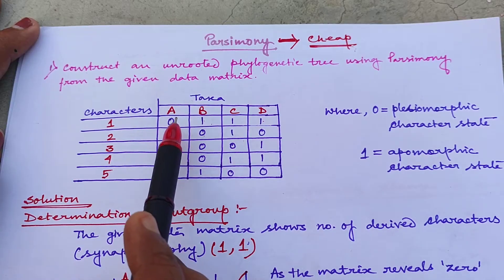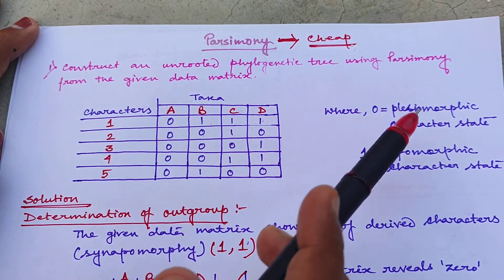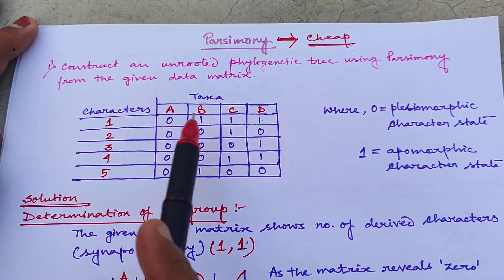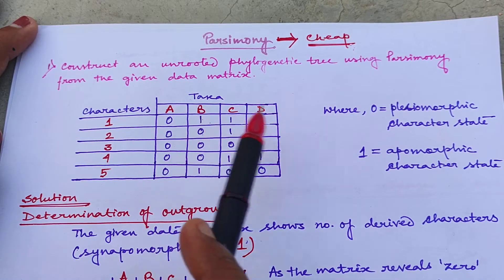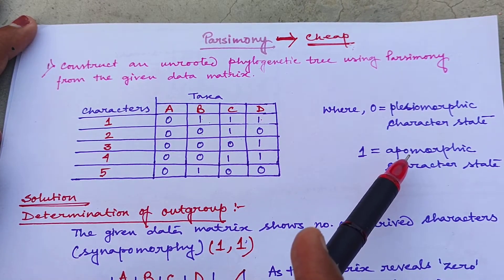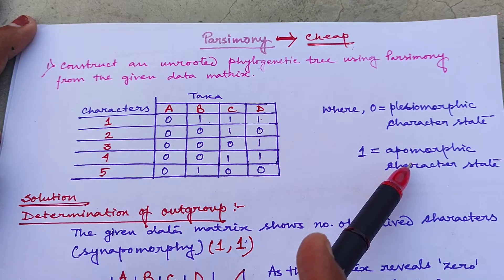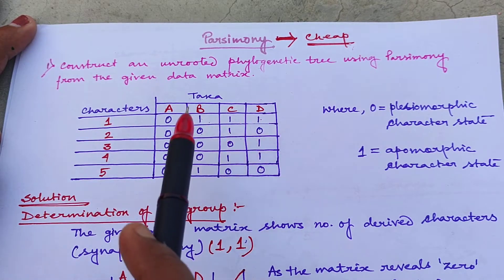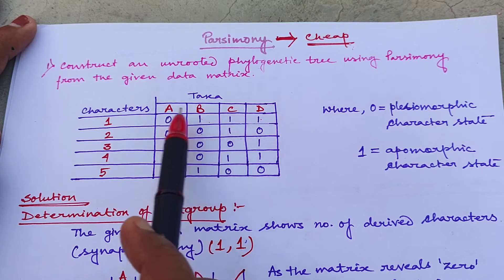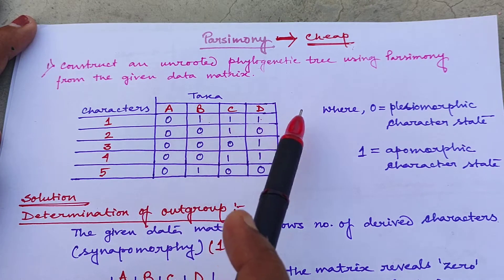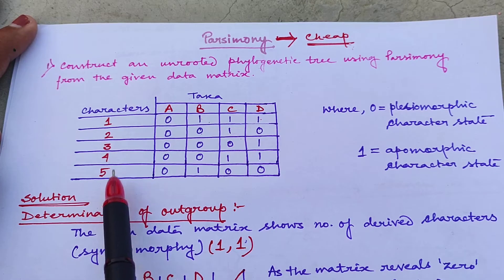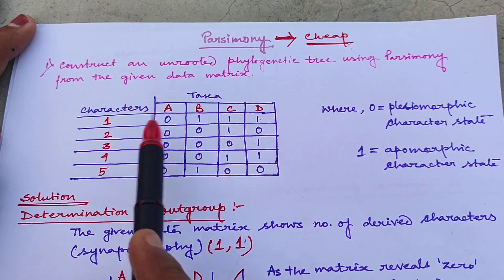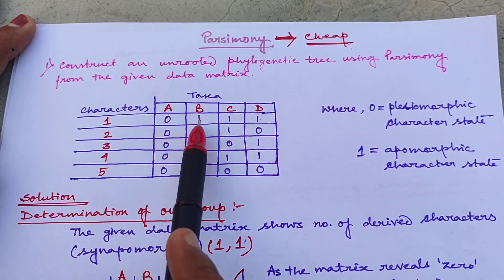Where 0 indicates plesiomorphic or ancestral character state of a character, and 1 indicates apomorphic or derived character state of any character. In this data matrix you can see there are 4 types of taxa: A, B, C, D, and there are 5 characters: 1, 2, 3, 4, 5. For each character there are 2 character states, 0 and 1.